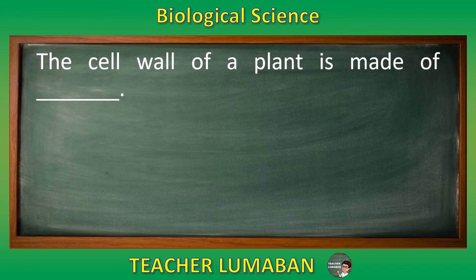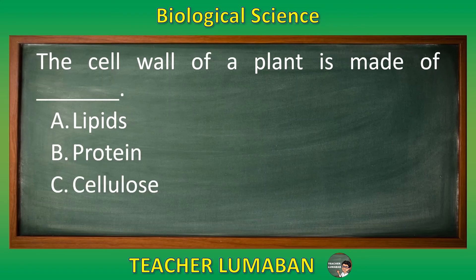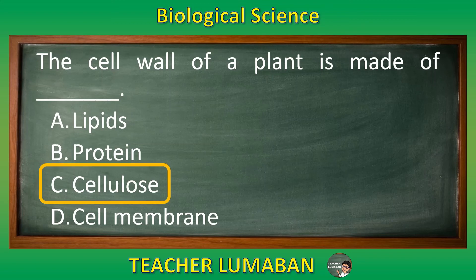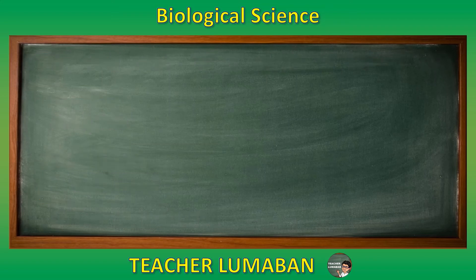The cell wall of a plant is made of blank. Letter A: lipids. Letter B: protein. Letter C: cellulose. Letter D: cell membrane. Choose the suitable answer based on the given choices in 5 seconds. 5, 4, 3, 2, 1. The correct answer is Letter C, cellulose. The cell wall of a plant is made of cellulose.